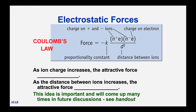As the ion charge increases, the attractive force increases as well. Ion charges go up, the attractive force goes up. As the distance between the ions increases, the attractive force decreases—it gets harder and harder to shake someone's hand as you're basically walking away from them. We are not going to actually use Coulomb's law for calculations—that's something physics will do—but in chemistry, we'll use Coulomb's law to explain why some bonds are stronger and some are weaker.